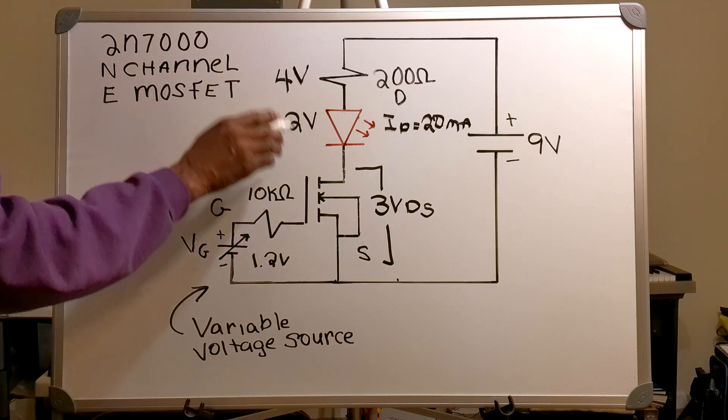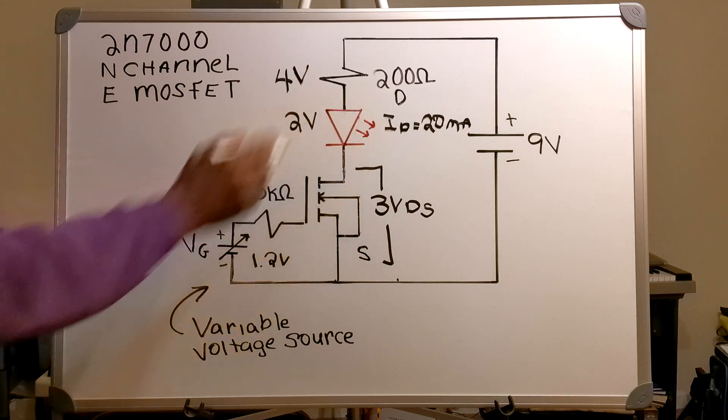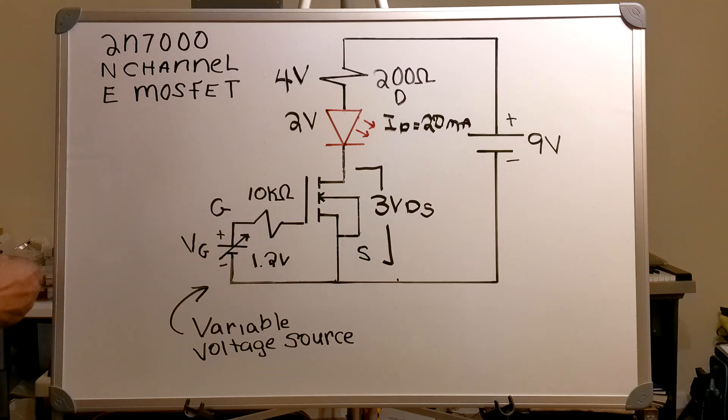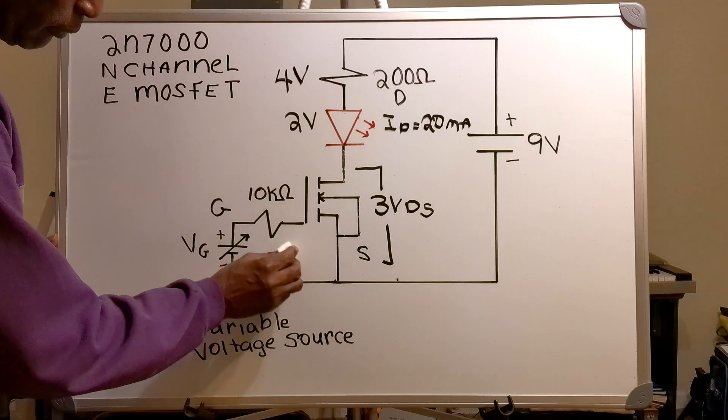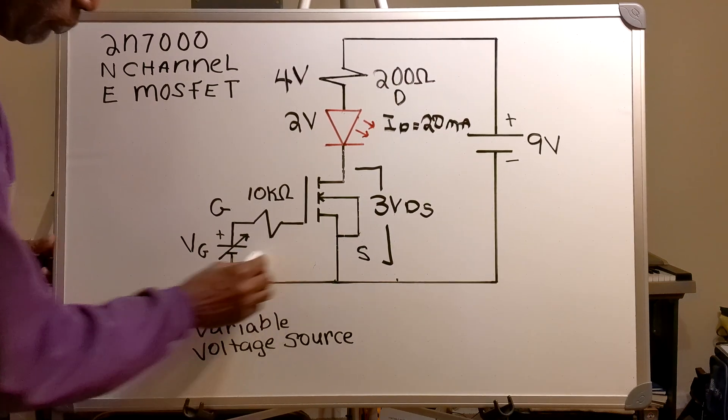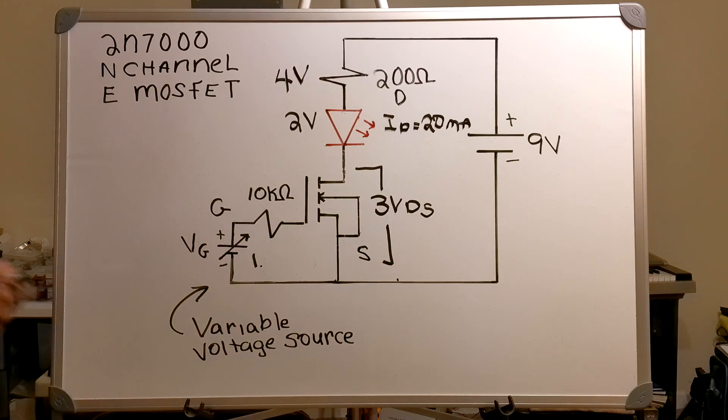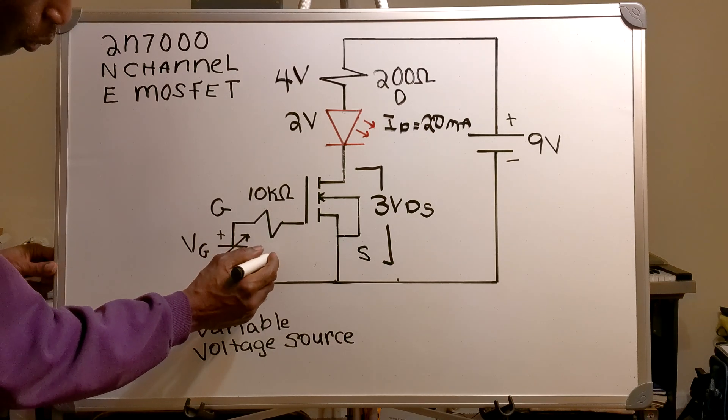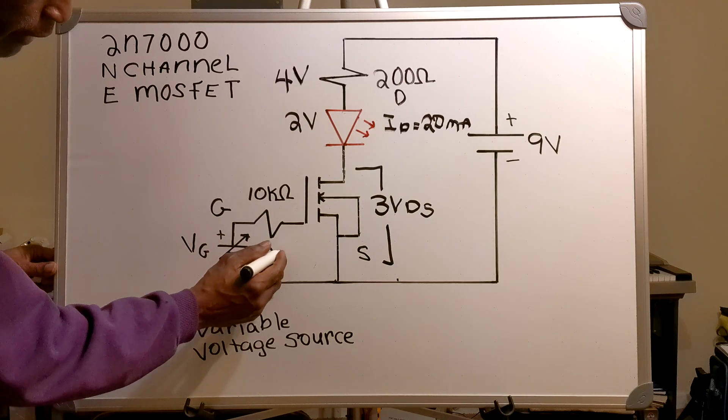In order for me to get my 20 milliamps I'm going to have to raise my gate voltage, and my gate voltage will be somewhere around 1.96 volts.